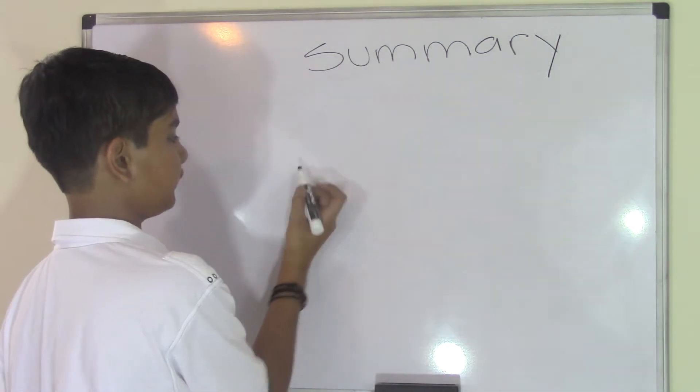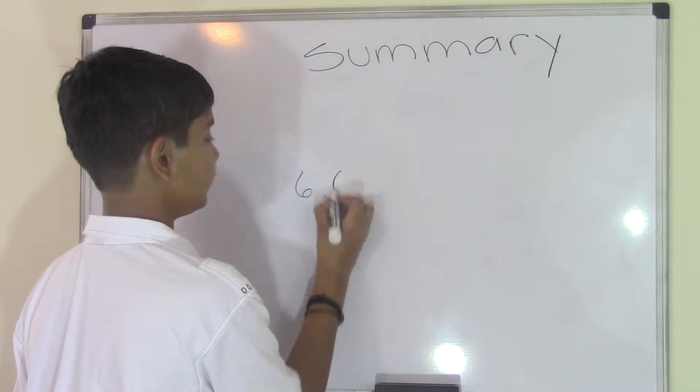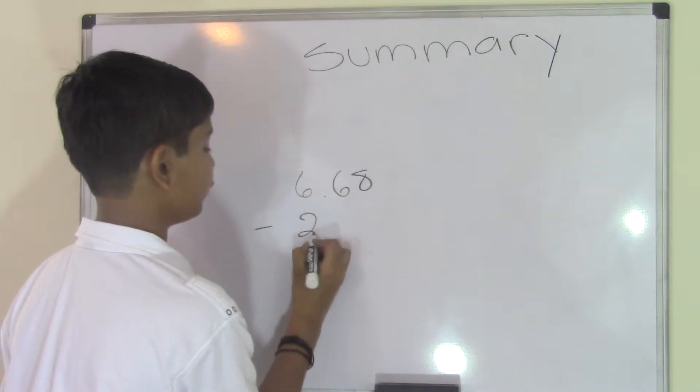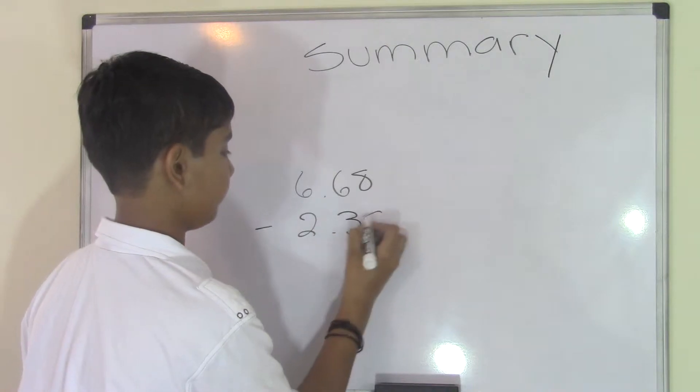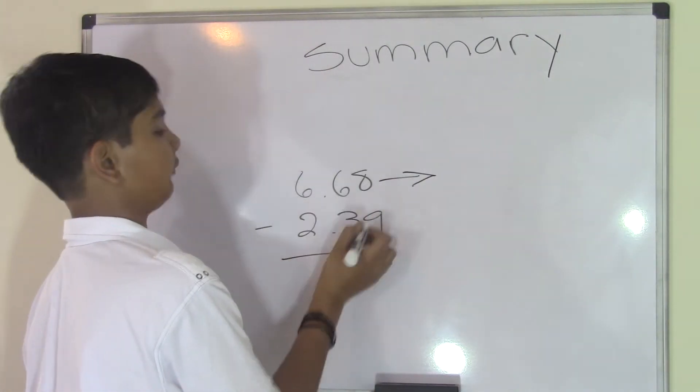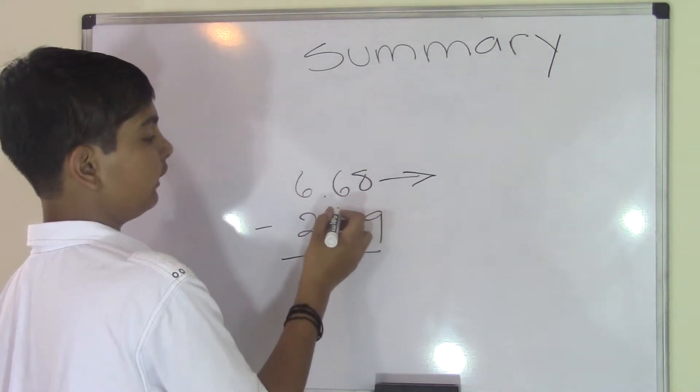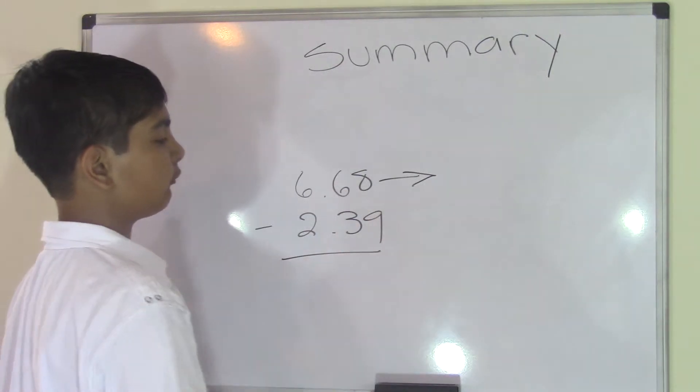Now let's do a subtraction problem. For example, we get a problem such as 6.68 minus 2.39. To do this, always look at the number after the decimal point and identify if it's greater than or less than. 68 is greater than 50, so we round the 6 to 7.